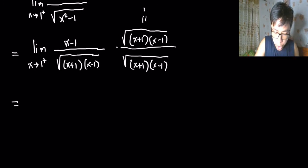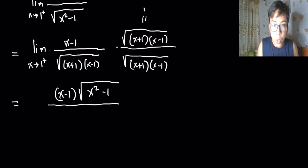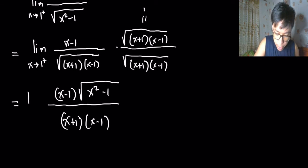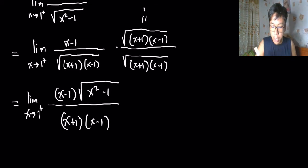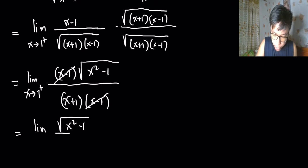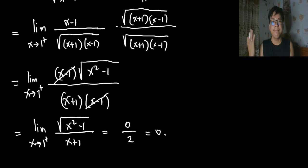After multiplying, the numerator becomes (x-1)·√(x²-1) and the denominator becomes (x²-1). We can then cancel out terms, leaving (x²-1) / (x+1) as x approaches 1 from the right. Substituting x = 1, we get 0 / 2, which equals 0. That's our answer.